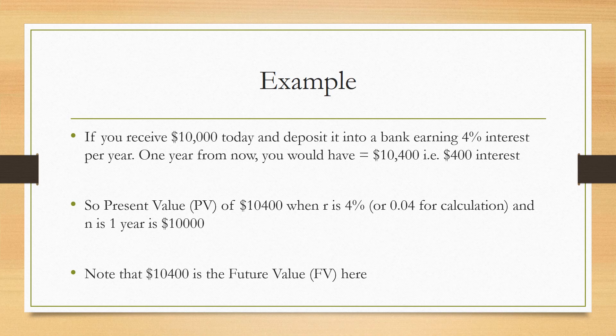Note that in this example the future value is ten thousand four hundred dollars, the present value is ten thousand dollars, the rate of interest is four percent, and n is one year. Keep the formula in mind: PV equals FV divided by (1 + r) to the power n, as shown in the previous slide.